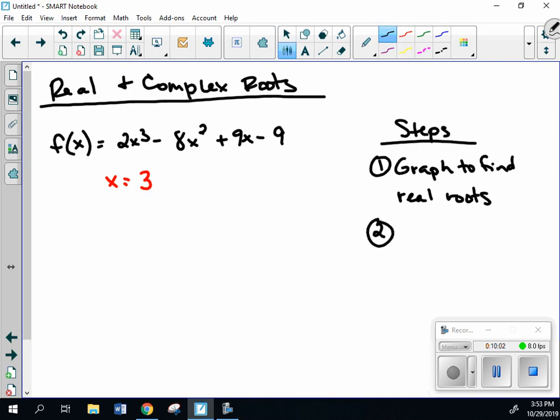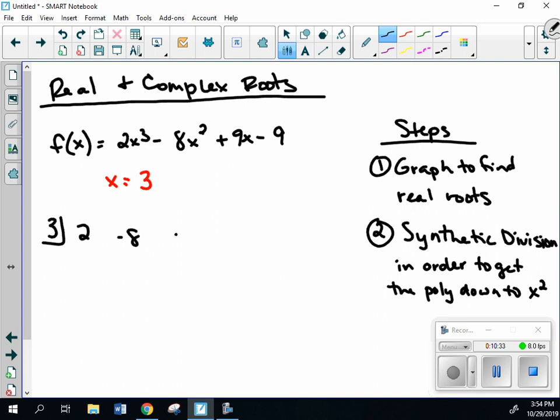So, once you find a root, your second step is to do synthetic division in order to get the polynomial down to an x squared. And the reason why is because if you get it down to an x squared, you could then use the quadratic formula. You could use completing the square. But I'm going to go ahead and work with my synthetic division. So, I have 3, 2, negative 8, 9, and negative 9. Go through, do my synthetic division. I'm going to go through this quickly since we've already talked about it. If it truly is a root, you should end up with a remainder of 0, which in this case I do. So, I have 2x squared minus 2x plus 3.